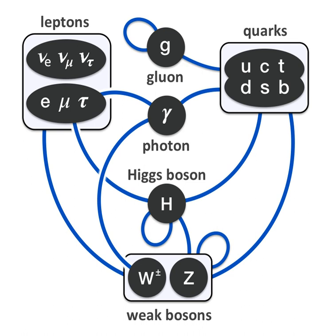In the Standard Model, the Higgs field is a complex scalar of the group SU(2)_L, expressed as φ = (1/√2)(φ⁺, φ⁰), where the superscripts plus and zero indicate the electric charge of the components. The weak hypercharge of both components is 1.